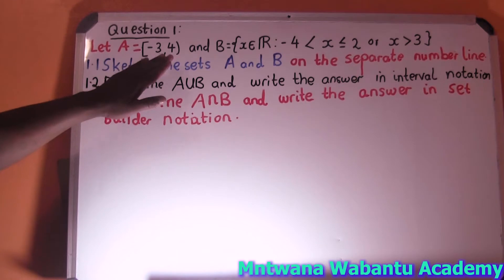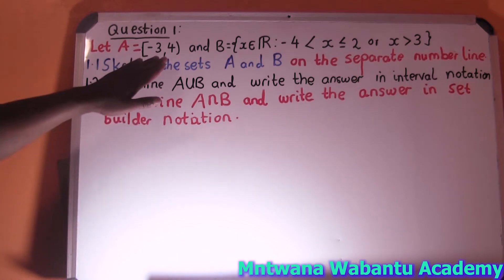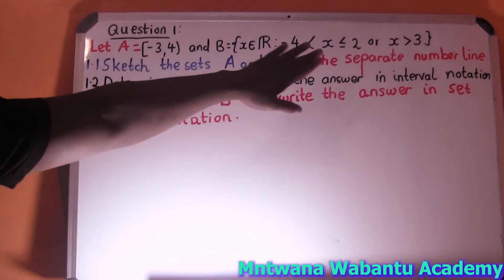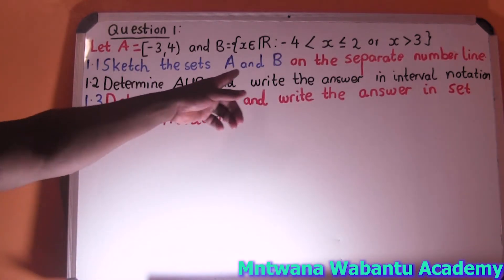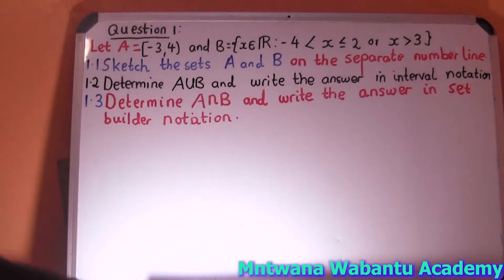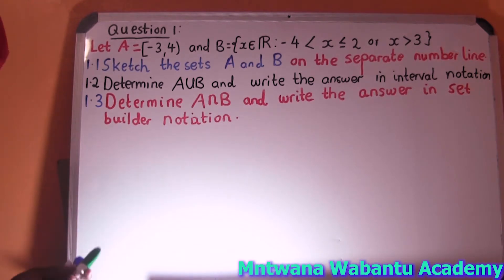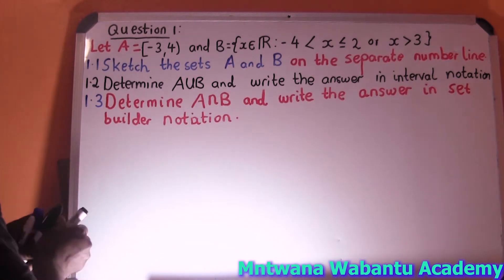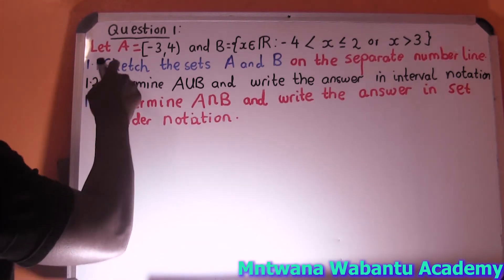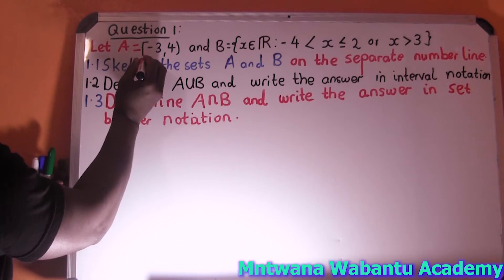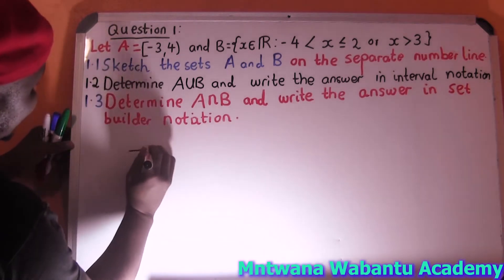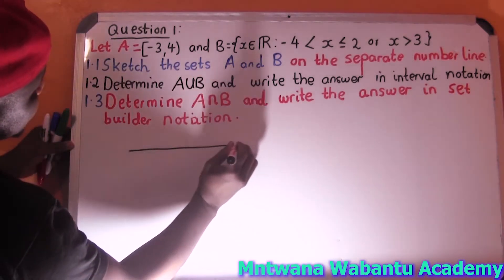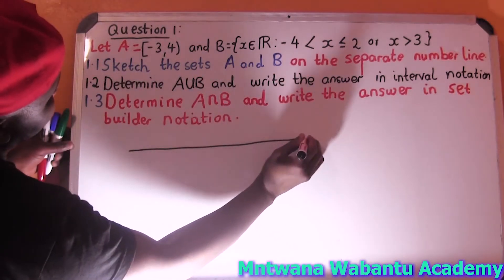Let's say we have Set A and Set B, just like we see here. We're going to represent A and B on a separate number line. Let's start with phase one — Set A — and then we'll go for Set B. A uses this bracket meaning including.